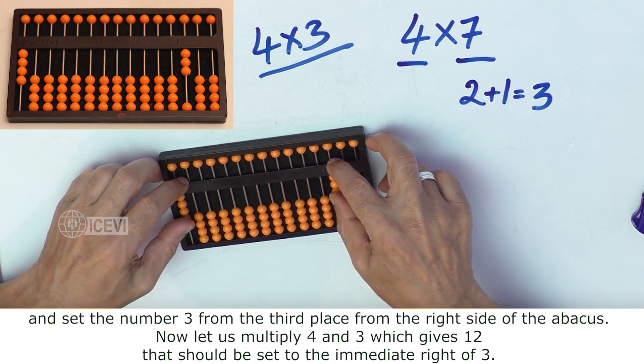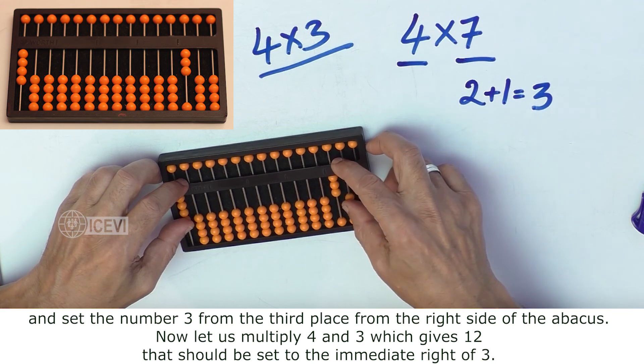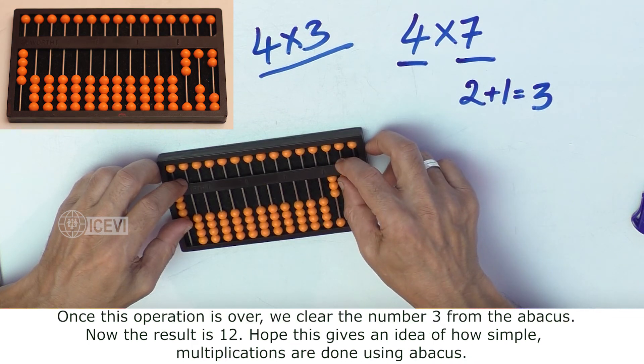Now, let us multiply 4 and 3, which gives 12. That should be set to the immediate right of the number 3. That is, 1 in the tens column and 2 in the units column.